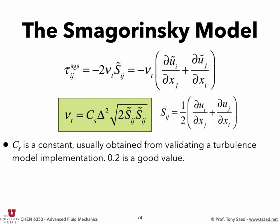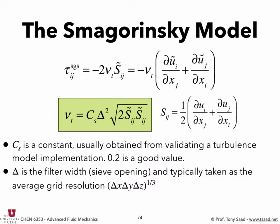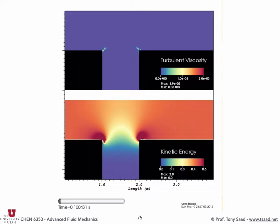Smagorinsky argued that because no explicit filtering is applied — we just solve for the filtered quantity without ever applying the convolution integral — the length scale must be the average size of the grid cell. He took delta = (delta_x * delta_y * delta_z)^(1/3), the cube root of the cell volume, which gives an average cell size that changes in space for a non-uniform grid.